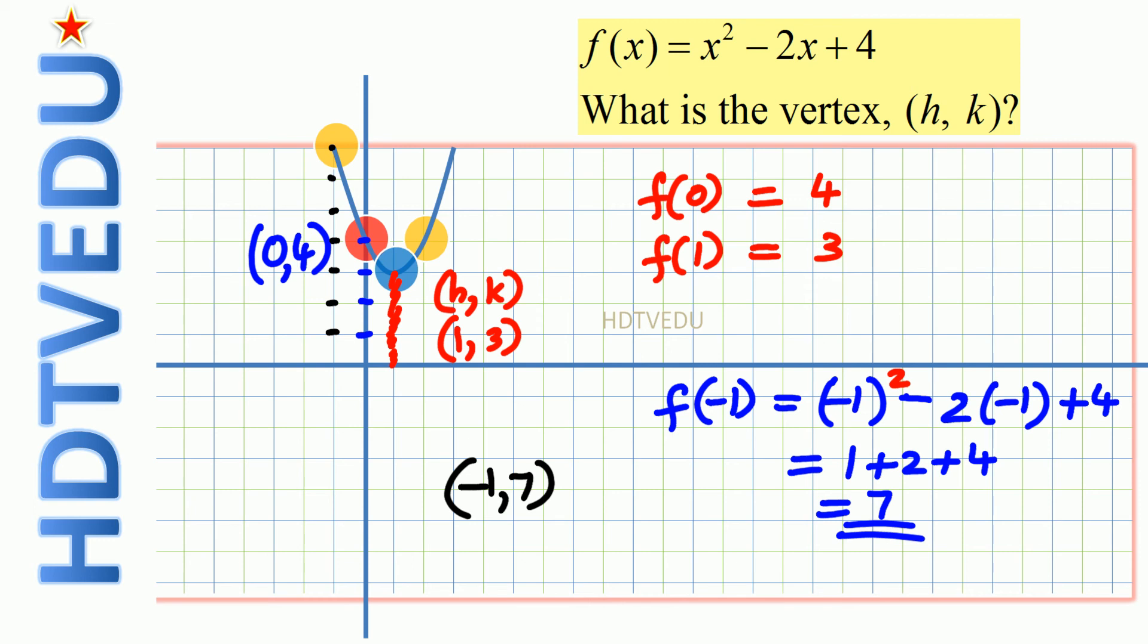When we substitute x equals 2, what do you get? f of 2, and that will be 2 to the power of 2 minus 2 times 2 plus 4. 2 to the power of 2 is 4. 4 minus 4 is 0, 0 plus 4 is 4. So we have 2, 4 as another point on our graph.